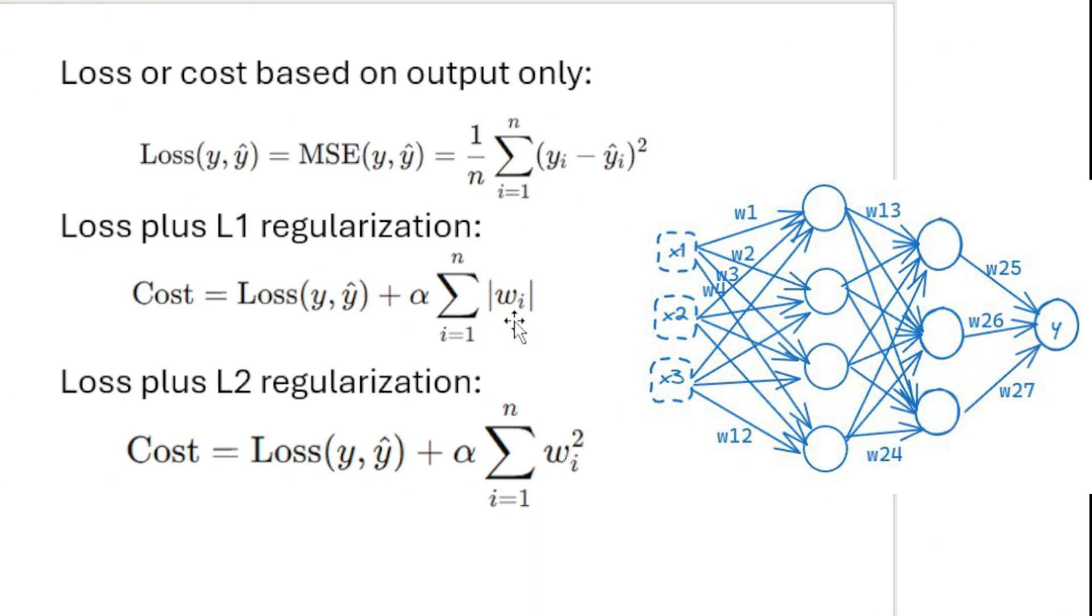And note here that if we have large values of w, those large values are directly added to the cost function, and hence the optimizer will try to reduce these weights during the back propagations.